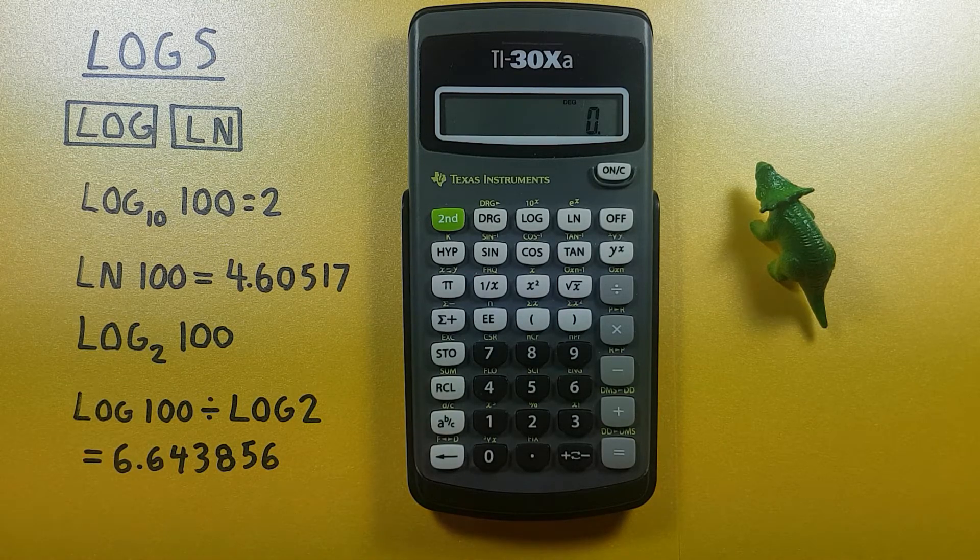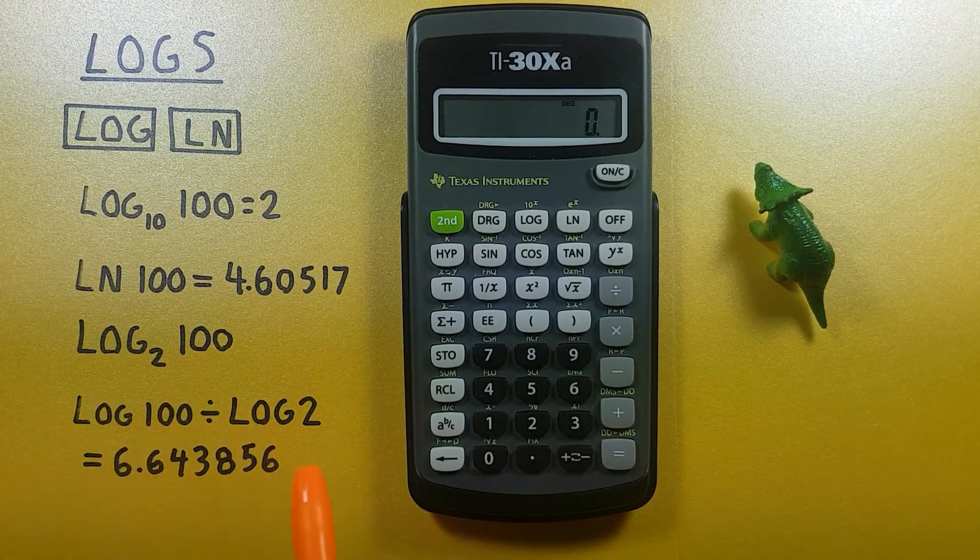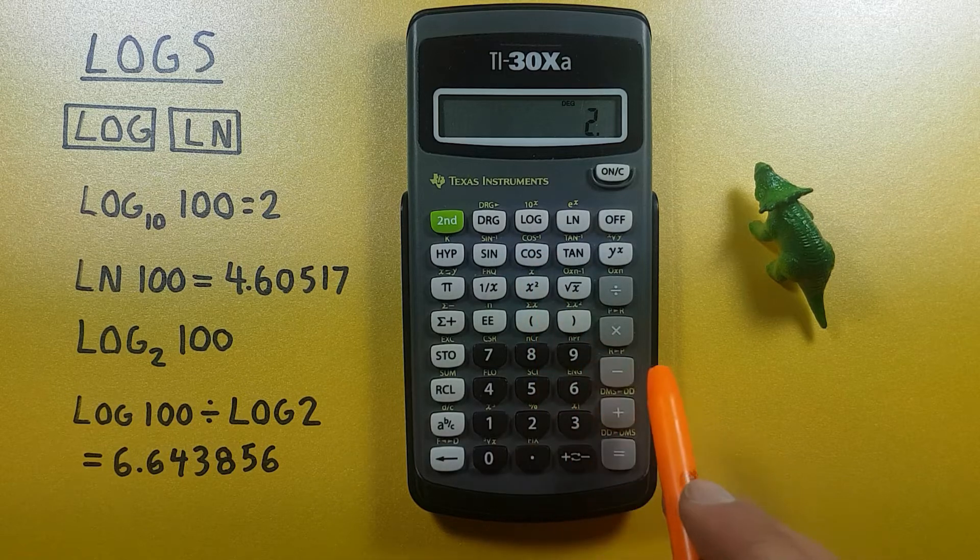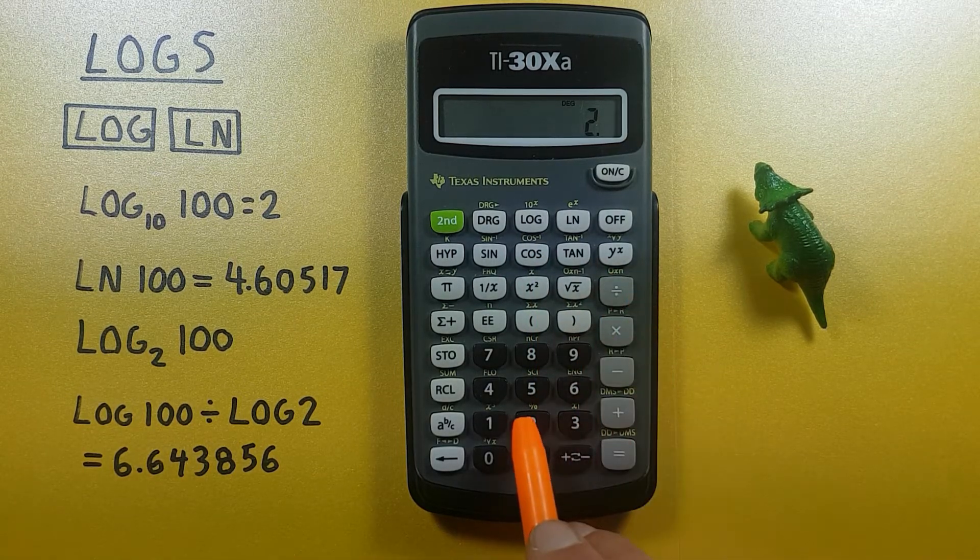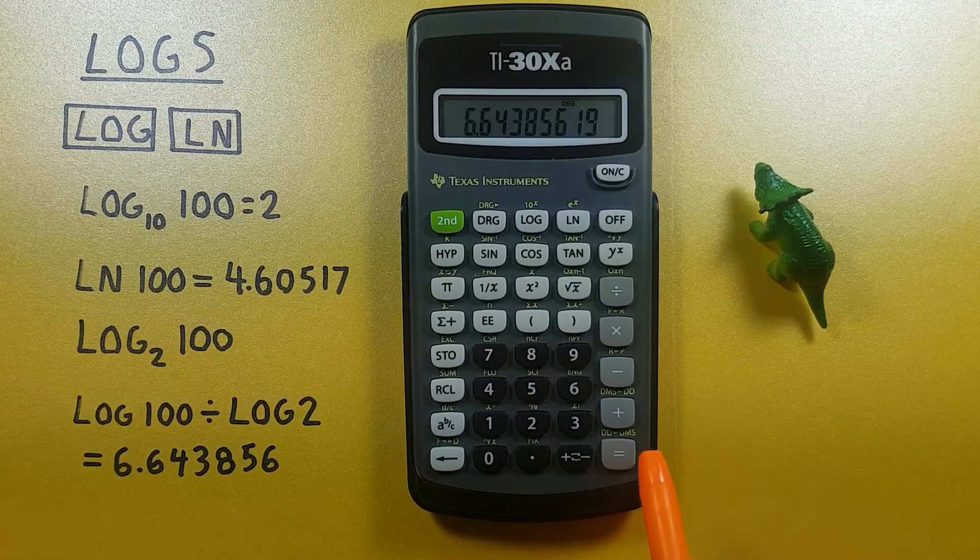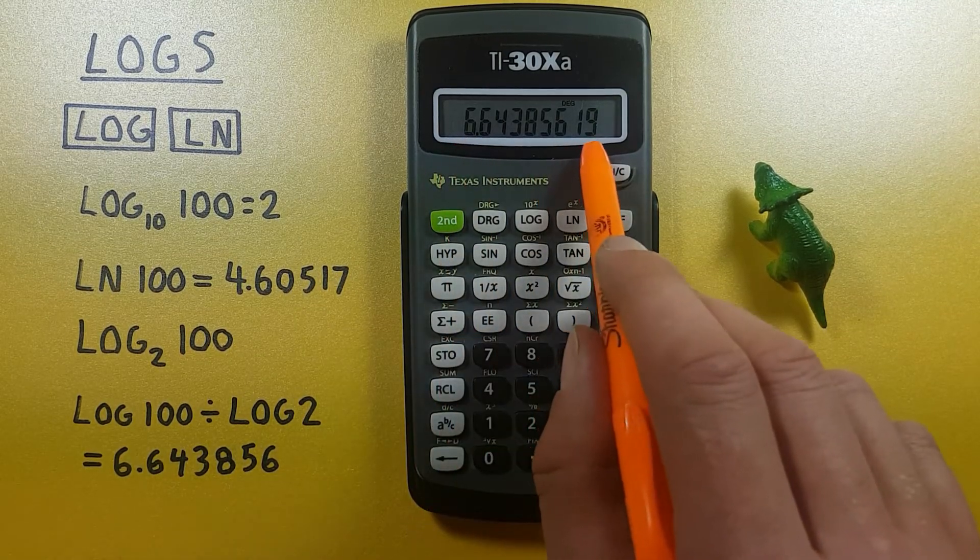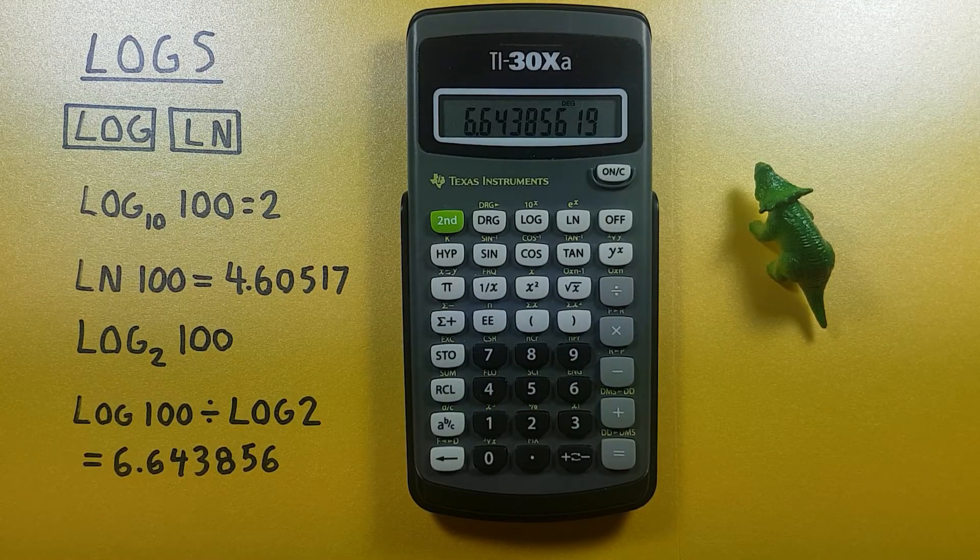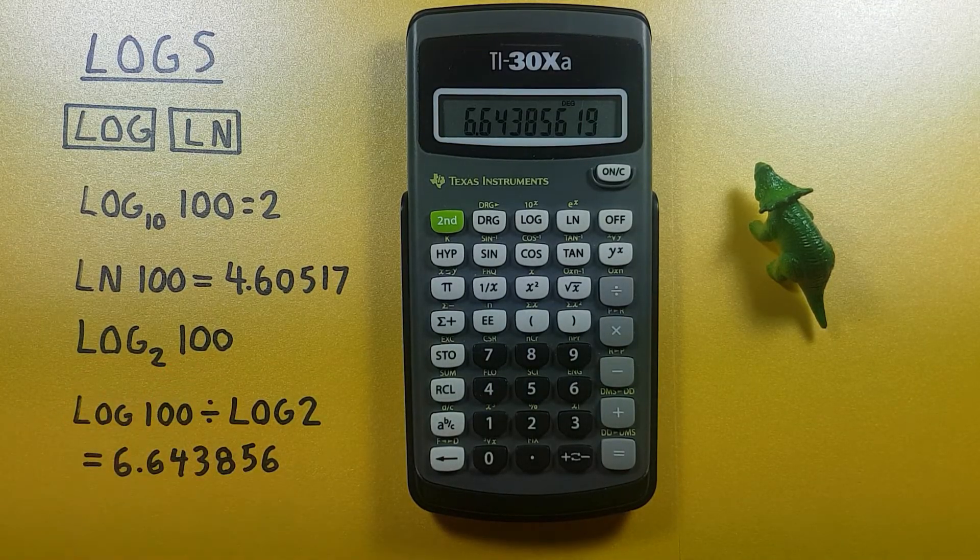So for this example, we would enter the log 100 divided by the log of 2 equals, and we get the result 6.643856, which is log base 2 of 100.